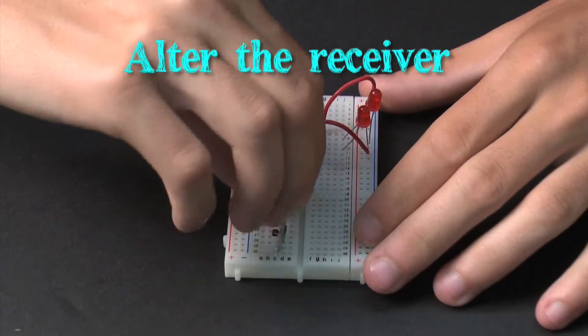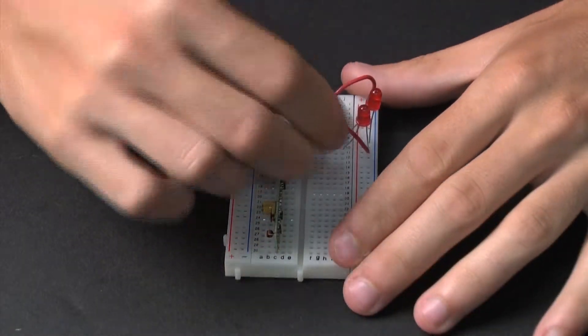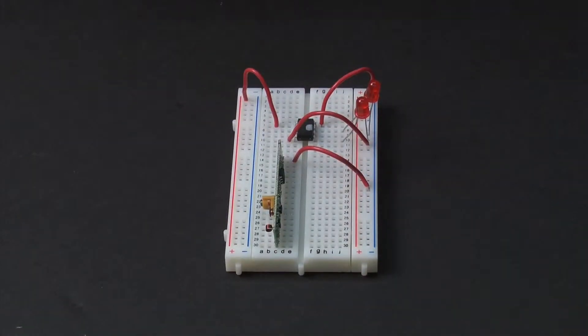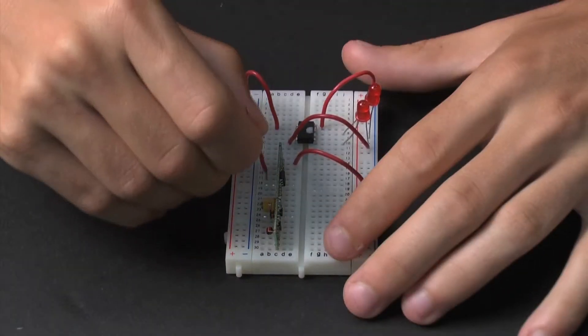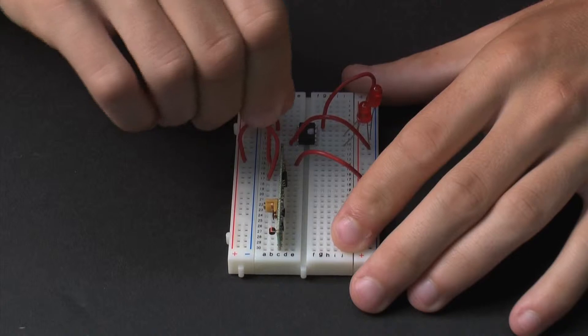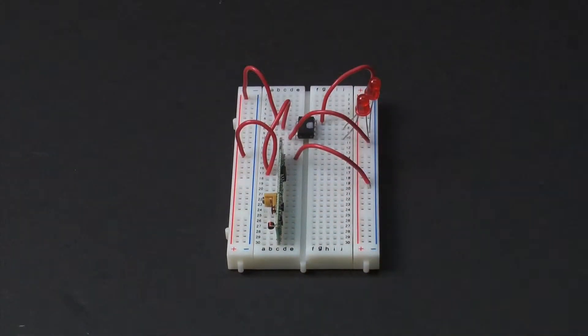Next, you must alter the receiver by adding the RF receiver chip and the appropriate wires to the circuit. The RF receiver chip converts the RF signal into an electric signal. The electric signal is connected to the input on the decoder chip. In order to do this conversion, the RF receiver chip uses power from the power rails.